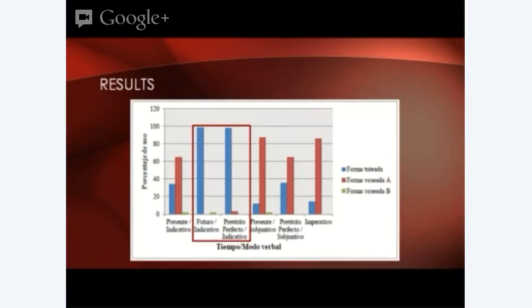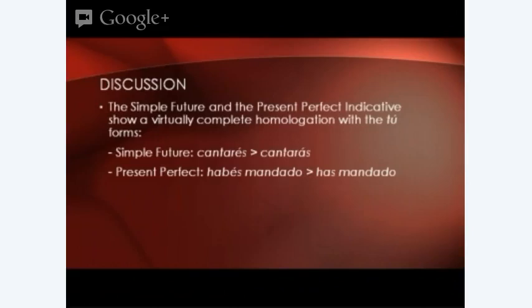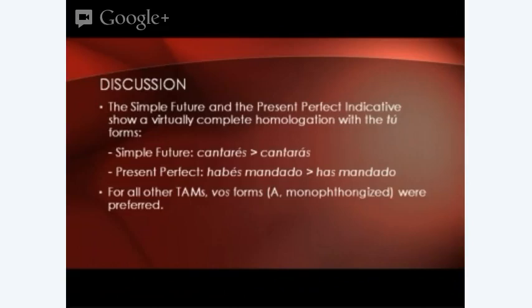To summarize the discussion: the simple future and present perfect indicative show virtually complete homologation with the tú forms — cantarés to cantarás and habés mandado, which was never tested in Central America except for El Salvador, to ha mandado. For all other TAMs, the monophthongized voseo forms were preferred, though tú forms are infiltrating the voseo paradigm.